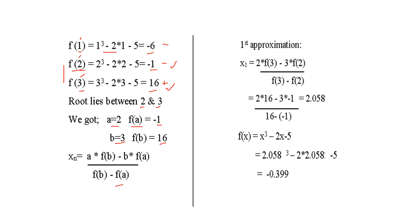The formula is: xn = [a·f(b) - b·f(a)] / [f(b) - f(a)]. For the first approximation, x1 = [2×16 - 3×(-1)] / [16 - (-1)] = 2.058. And f(x1) = -0.399.